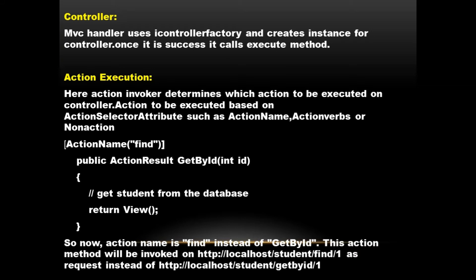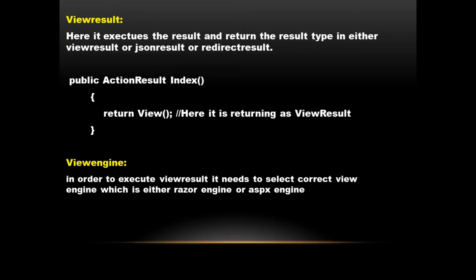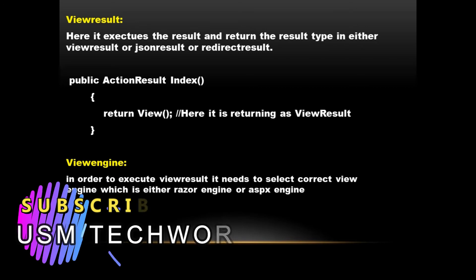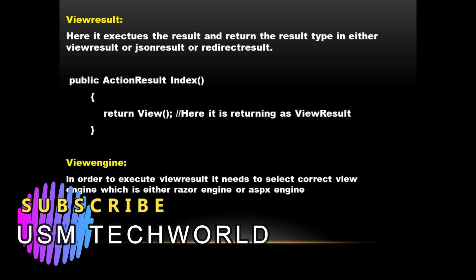Action verb is also checked in the action execution block. Action verbs include HTTP GET, HTTP POST, and HTTP DELETE — these are all the action verbs in the action selector attribute. After that, it executes the action and returns a result type such as view result, JSON result, content result, or redirect result.